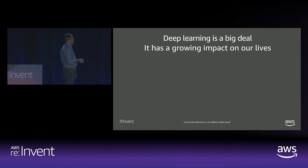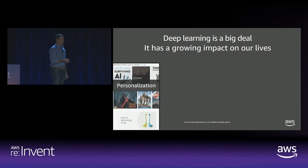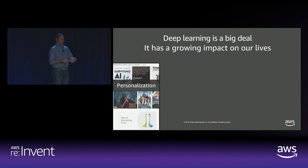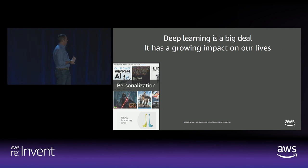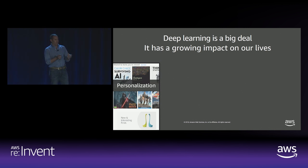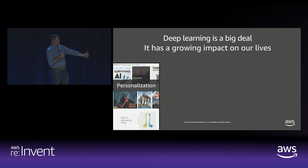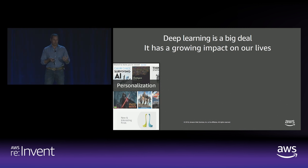Deep learning has a growing impact on our lives. Looking at services we consume every day: we have personalization services — if you watch one type of show, we can look at your past history and compute a set of recommendations for you. With the traditional rules-based model, the number of rules you'd need to account for everybody's tastes and video history — you just couldn't code that. There's no way to write a traditional algorithm with hard-coded rules for those types of problems, so you have to use machine learning.